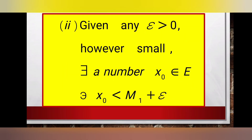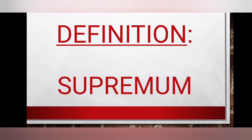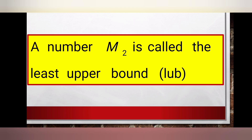The second condition: given any epsilon greater than zero, however small, there exists a number x-naught in E such that x-naught is less than m1 plus epsilon. m1 is called the infimum of E, and this is how it is written.